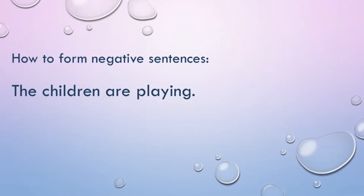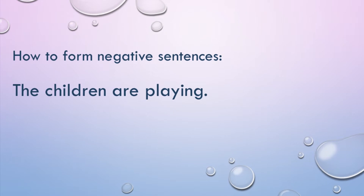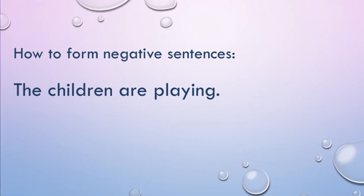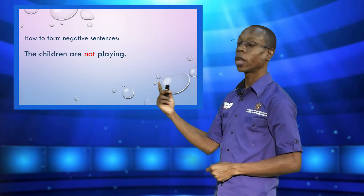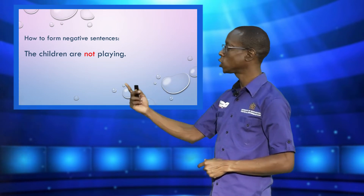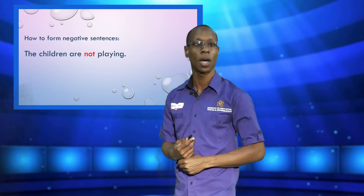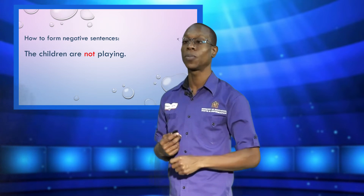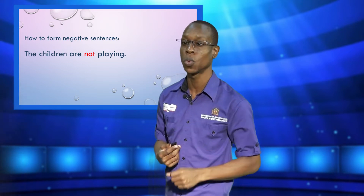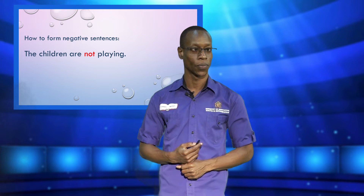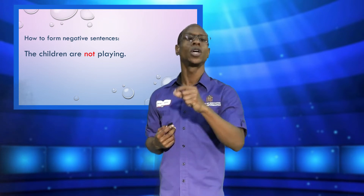That's right — we insert the word 'not' right after the to-be verb. So the negative sentence becomes: 'The children are not playing.' We put the word 'not' right after the word 'are' in the sentence.